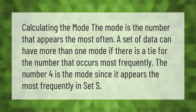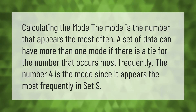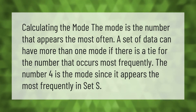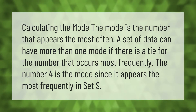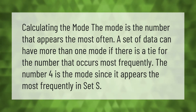Calculating the mode: the mode is the number that appears most often. A set of data can have more than one mode if there is a tie for the number that occurs most frequently. The number four is the mode since it appears the most frequently in set S.